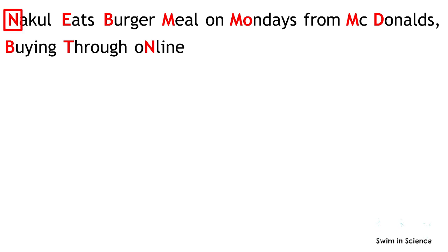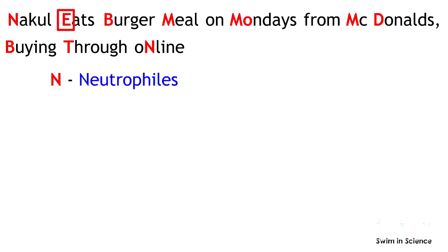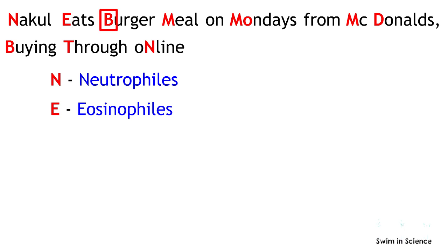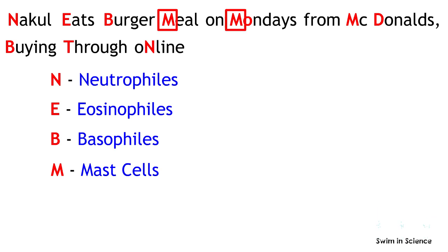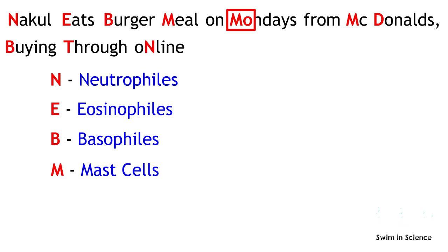Here, N stands for neutrophils, E stands for eosinophils, B stands for basophils, and M stands for mast cells. There are two Ms, so to avoid confusion, the second M has an O adjacent to it, which represents monocytes.